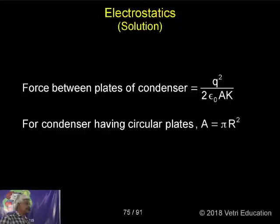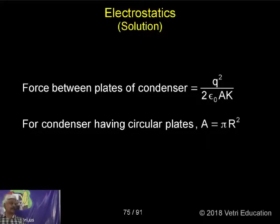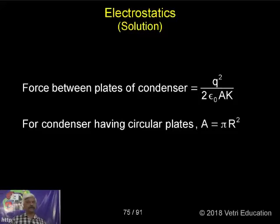Force between the plates of a condenser: Q squared by 2 epsilon naught A K. For a condenser having circular plates, A is equal to pi r squared. This is a standard formula already given in the notes.